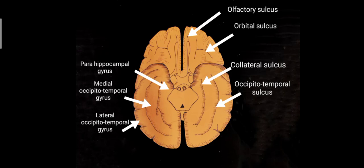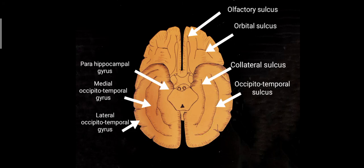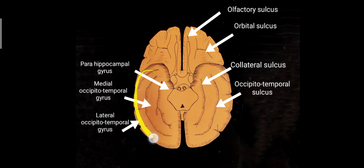It is very easy to remember — if you remember the sulcus you can name almost all of the gyri. On the inferior surface we have the olfactory sulcus, the orbital sulcus, the collateral sulcus on the tentorial surface, and the occipito-temporal sulcus also on the tentorial surface. This concludes the important sulci and gyri of the cerebrum. We have discussed the superolateral surface, the medial surface, and the inferior surface. Thank you.